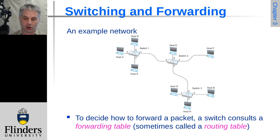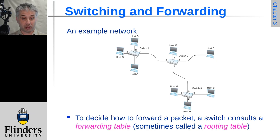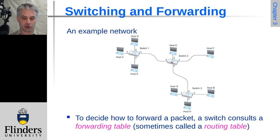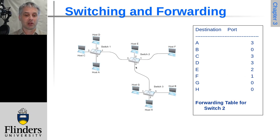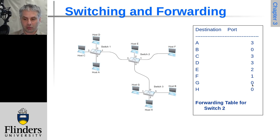If host B sends a frame to host G, it comes in on link 3 and the switch knows host G is on link 1 and sends it straight out there. If it wanted to send something to host C, it sends it out on link 0, because that's in the direction of switch 2. Looking at switch 2 in this example, port 1 has only one host — one entry for host F — whereas port 0 has another whole switch with three hosts, so there are three corresponding entries, and likewise for switch 1.